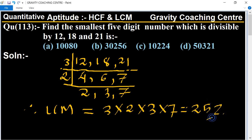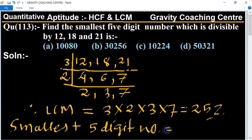Now 252 is divisible by 12, 18, and 21. We need the smallest 5-digit number divisible by these. The smallest 5-digit number is 10,000.